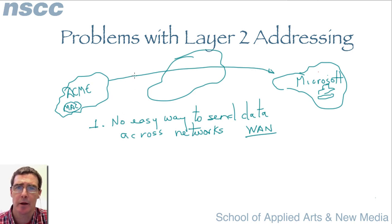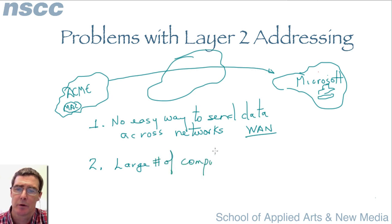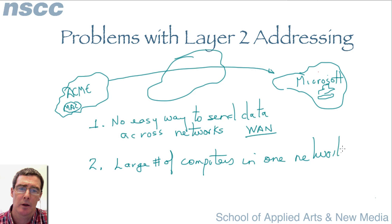Now we're going to look at a second problem with layer 2 addresses. This second problem happens when we have a large number of computers in one network. We'll look at an example of where this breaks down.